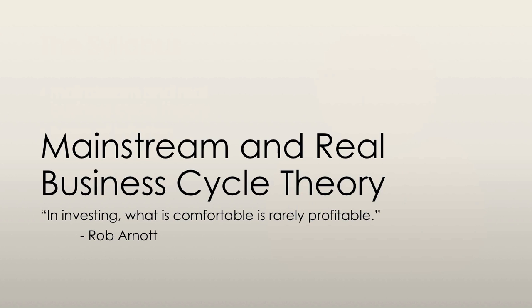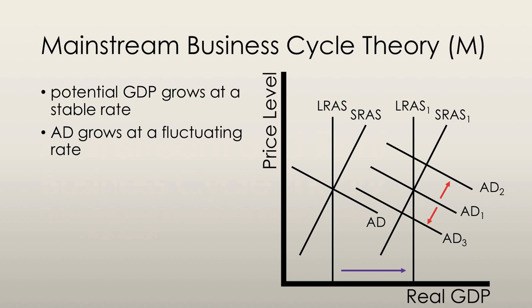Let's start off by explaining the mainstream and real business cycle theories. There are multiple mainstream business cycle theories, but all of them emphasize that potential GDP, or long-run aggregate supply, grows at a stable rate, but aggregate demand grows at a fluctuating rate.